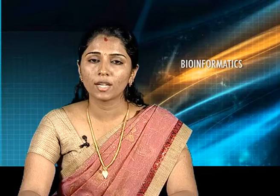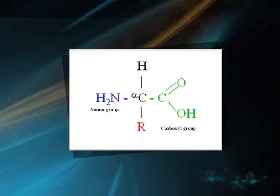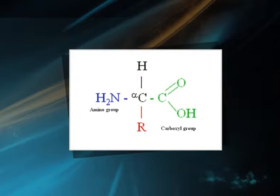Let us study about the amino acids, which are the structural unit of proteins. Proteins are made up of 20 different amino acids. Amino acids are organic carboxylic acids in which at least one carbon atom of the hydrocarbon chain is replaced by an amino group. Here you can see the general formula of an amino acid. Typically, an amino acid is a short chain compound with the central carbon atom called the alpha carbon. A hydrogen atom, an amino group, a carboxyl group, and a side group are attached to the alpha carbon through covalent bonds.